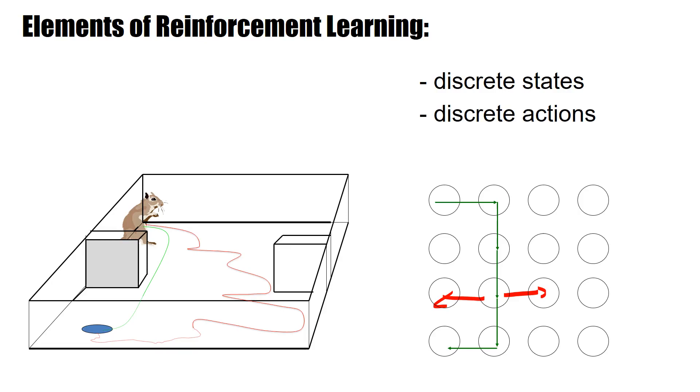And finally, you find the reward location. So the elements are, we have discrete states, we also have discrete actions, and then we have sparse rewards. Why do I say sparse rewards? Because on most transitions there are no rewards. The reward is just at the very end.